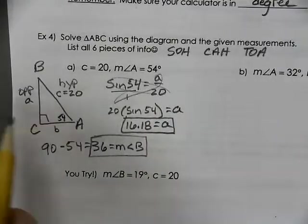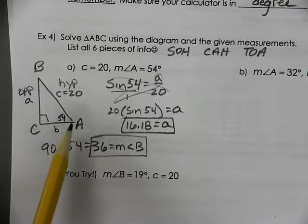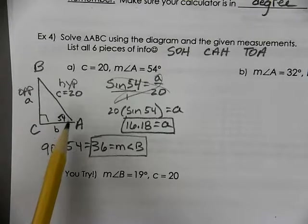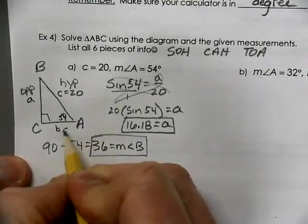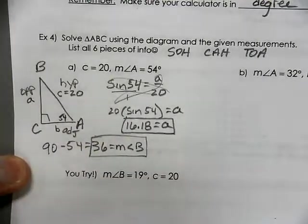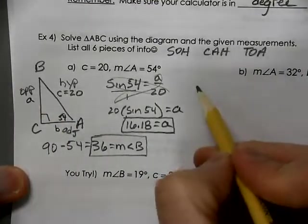So now we know two sides. We know side C and side A. We now have to find side B. Notice that side B is next to the 54. It's a leg, and it's next to it, so it's called the adjacent side. So we're going to use the adjacent and the hypotenuse, which is cosine.